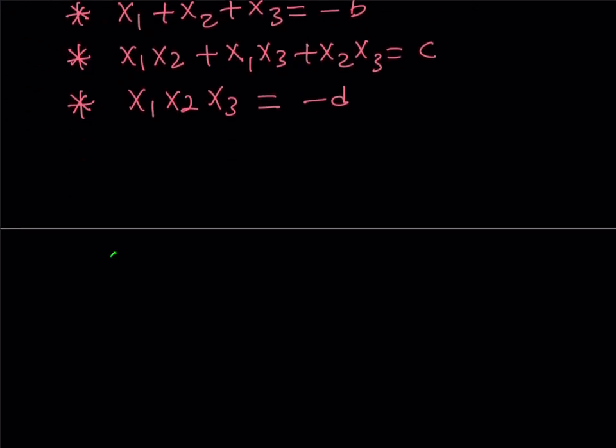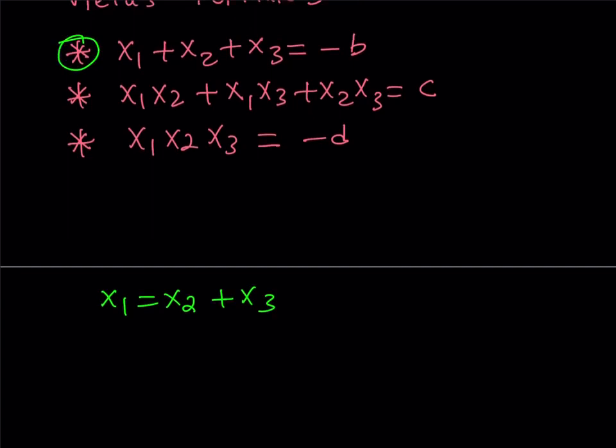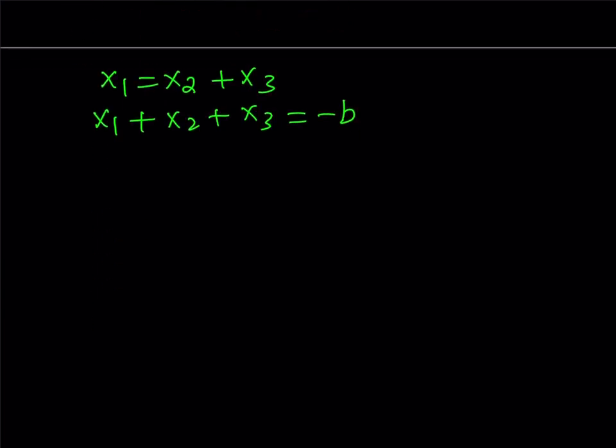Since we know that x1 is equal to x2 plus x3, and we have this first relationship, let's go ahead and put those together. How do we do that? We have x1 plus x2 plus x3 is equal to negative b. Now, what I can do is, I can substitute, instead of x2 plus x3, I can just write x1.